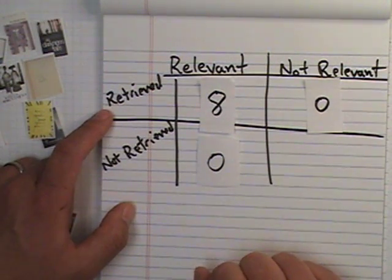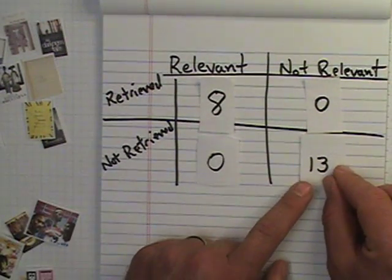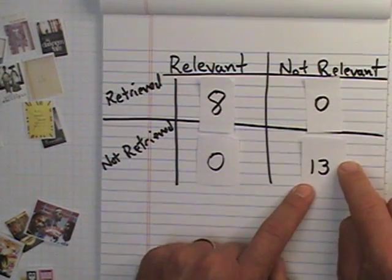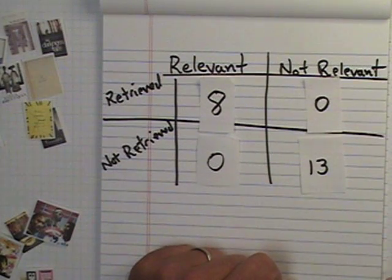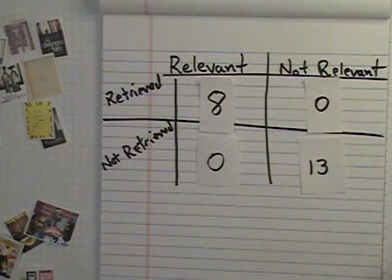And finally, irrelevant items that weren't retrieved, we'll just call that a dodge. We dodged those bad results, not retrieved items that were not relevant. And we actually got 13 dodges out of this search. So that's pretty good. That's a perfect search. Perfectly precise and with perfect recall.